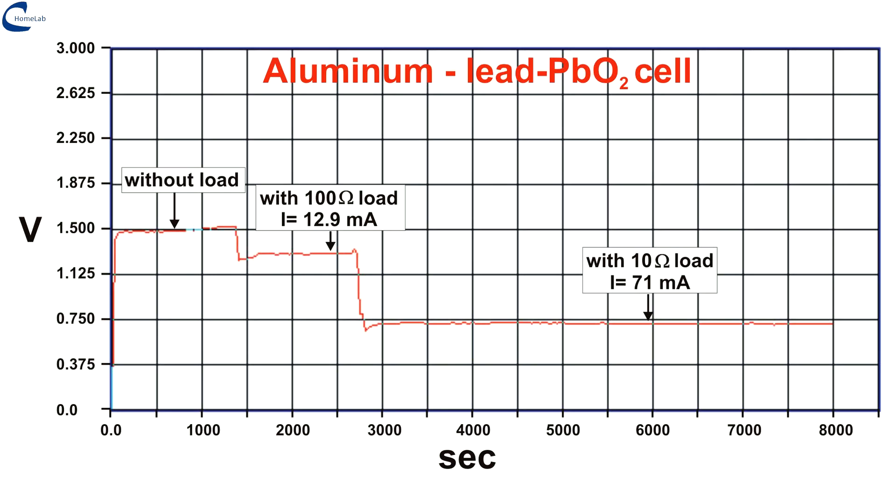From the graph it can be seen that with a load of 100 ohms the cell provides 12.9 milliamperes with a voltage of 1.29 volts. With 10 ohms it provides 71 milliamperes with a voltage of 0.71 volts, performance clearly superior to the aluminum graphite cell. This is due to the low electrical resistance of the positive electrode formed by lead-lead dioxide.